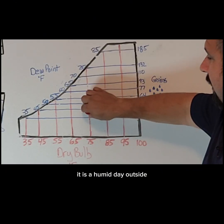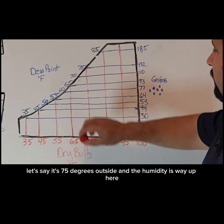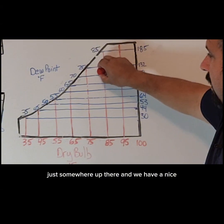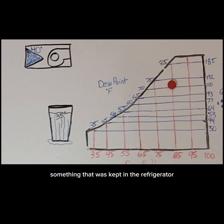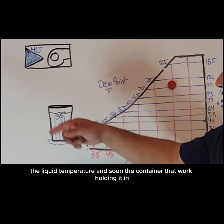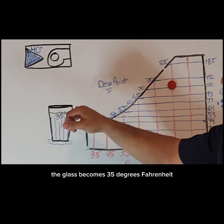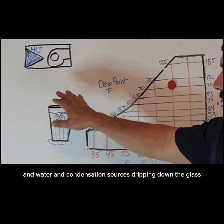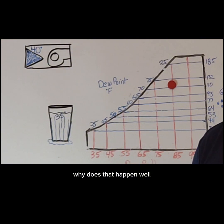It is a humid day outside. Let's say it's 75 degrees outside and the humidity is way up there. And we have a nice cold drink that we just poured out of something that was kept in the refrigerator. So the liquid temperature, and soon the container — the glass — becomes 35 degrees Fahrenheit. Why does that glass start to sweat and water and condensation starts dripping down the glass, forming a puddle under it?